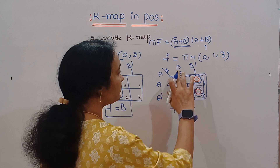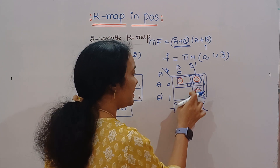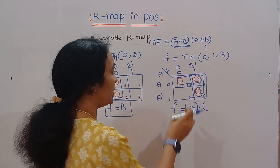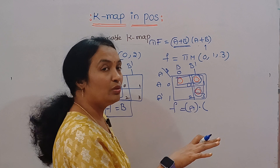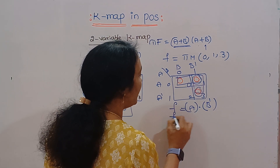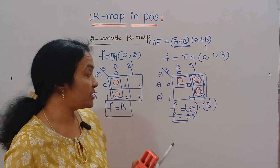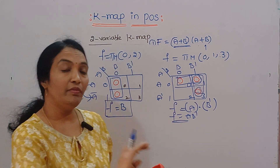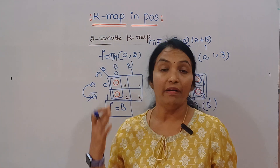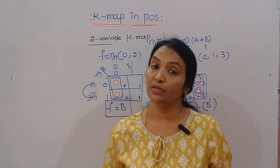Done. This is the first group and in the two groups there is a product. The column represents B complement and the answer is A · B complement. This is the grouping for POS representation. I will do individual videos for three variables, four, five, and six variables. What about don't care conditions? I will cover that in the next video.